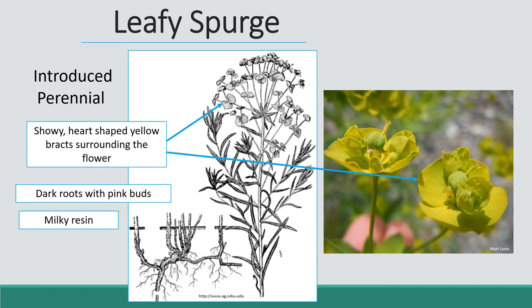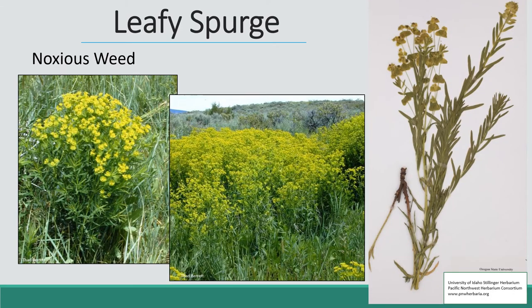However, sheep and goats like leafy spurge a lot, and so they can be used to manage this plant. That milky resin actually has quite a few energy compounds in it, giving animals a lot of energy. In the field, look for those yellow bracts. The leaves are just long and linear, and the flowers are all at the top of the stem, not going all the way down. On the right-hand side you can kind of see that red root going into the soil.